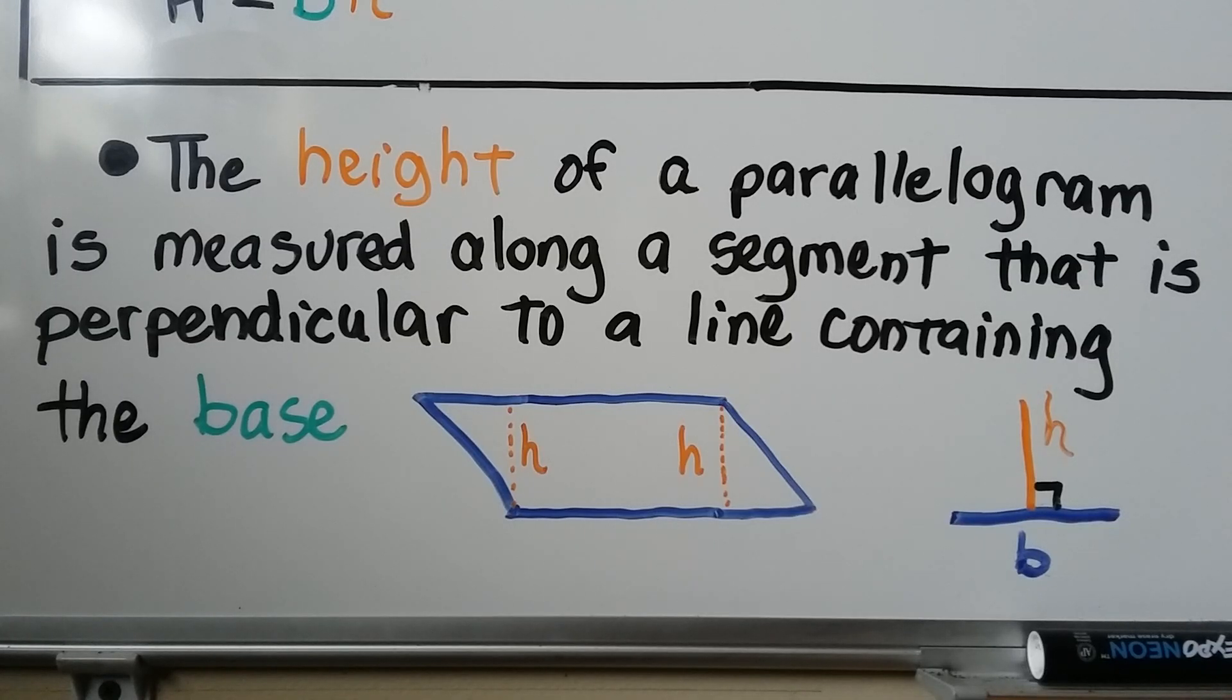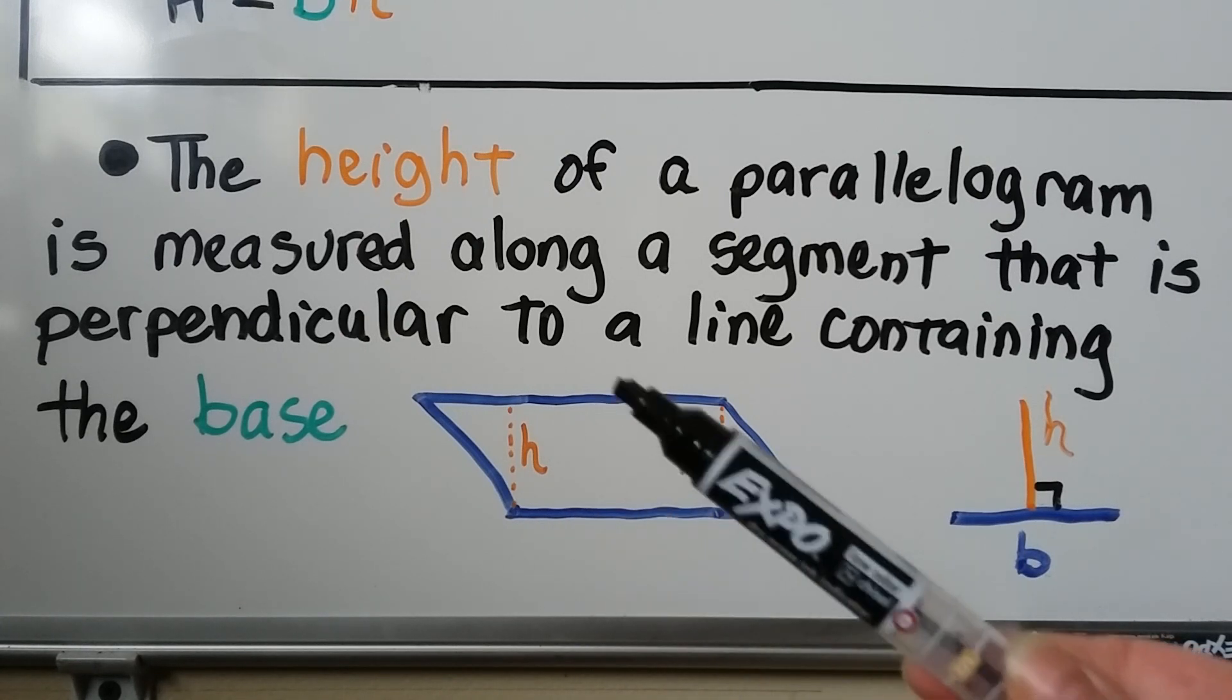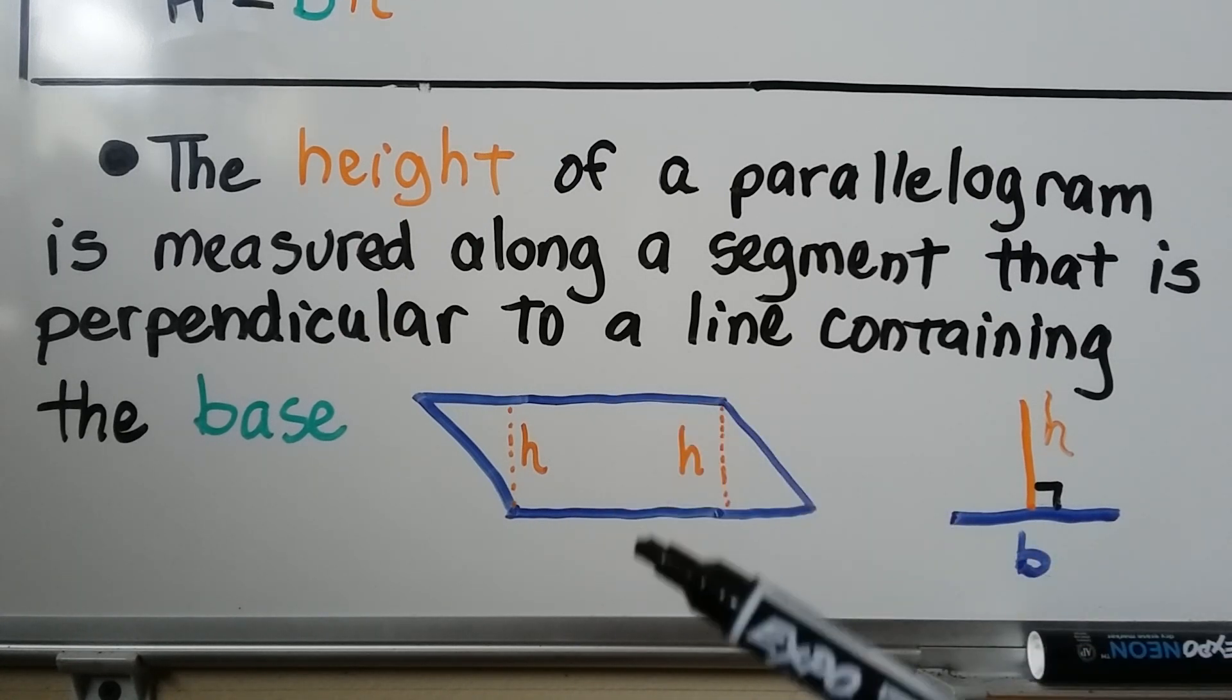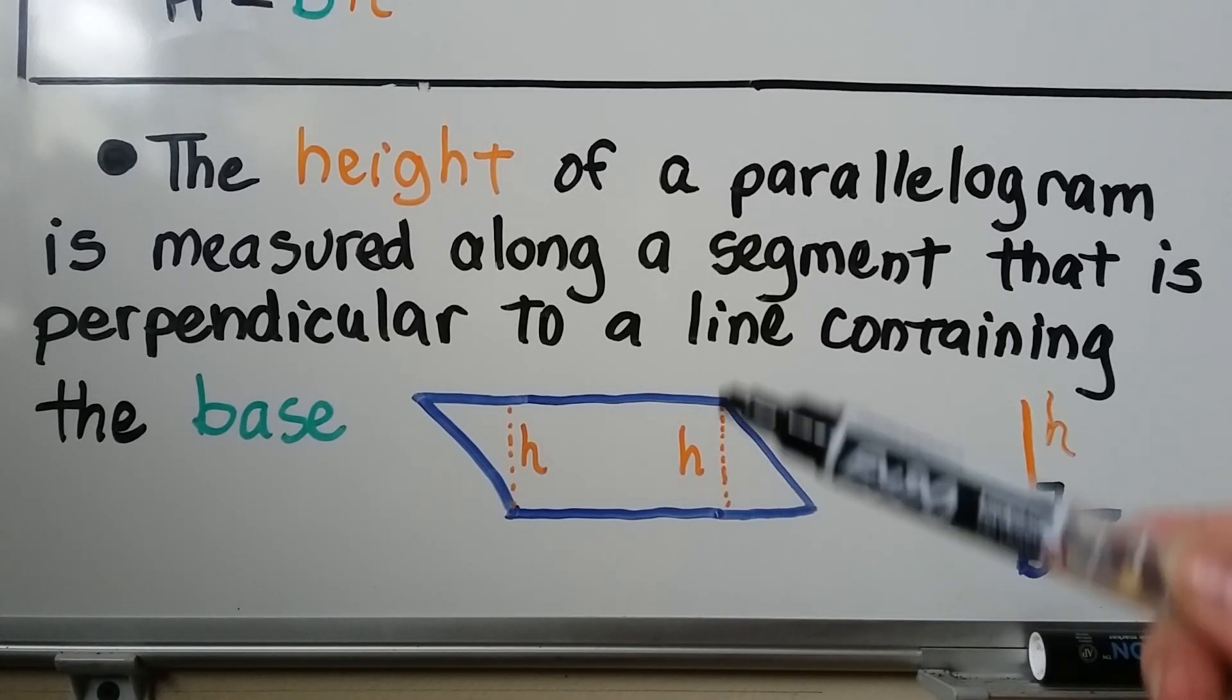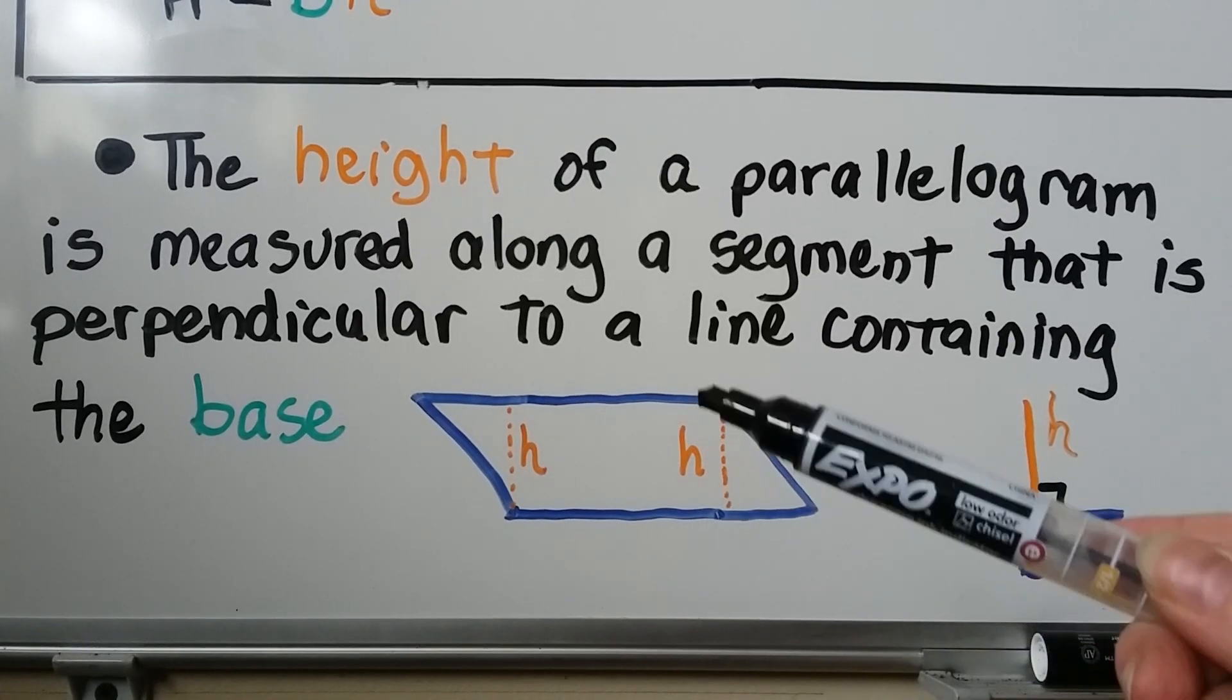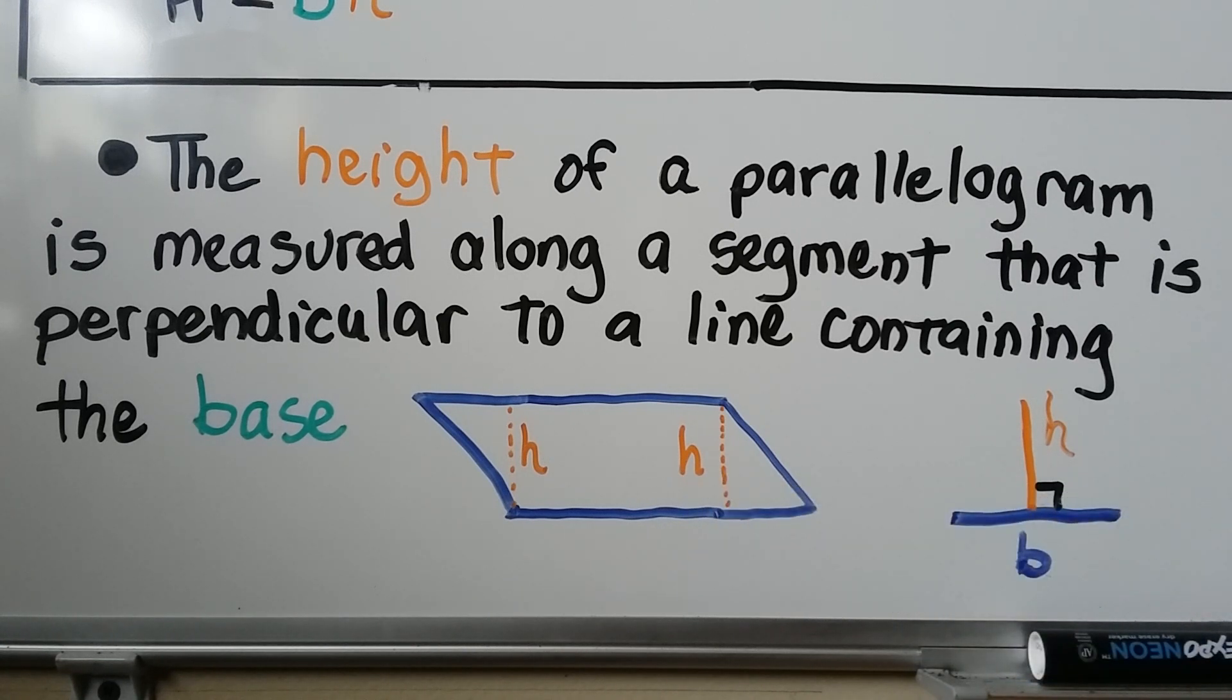The area of a parallelogram with a base b and height h is a equals b times h. The height of a parallelogram is measured along a segment that is perpendicular to a line containing the base. So we actually have a base one in base two here, don't we? Each of these can be considered a base. So if we have a line that is perpendicular to either of the bases, we can use that as our height.